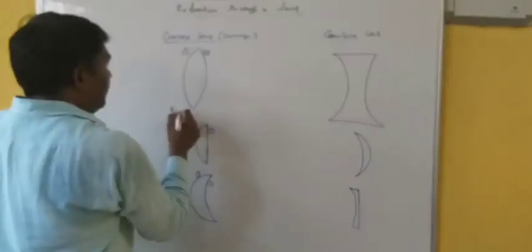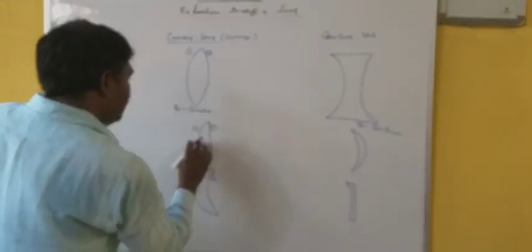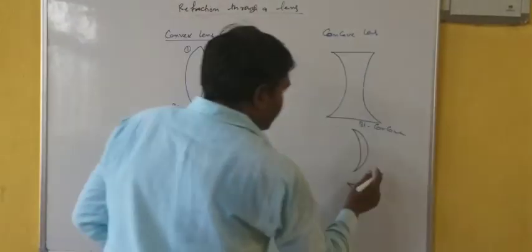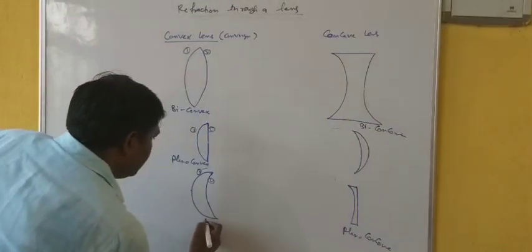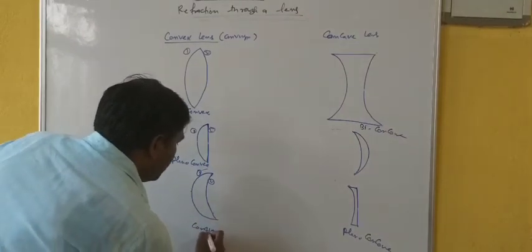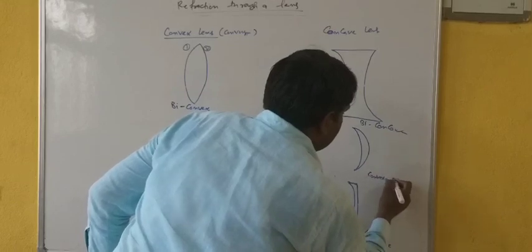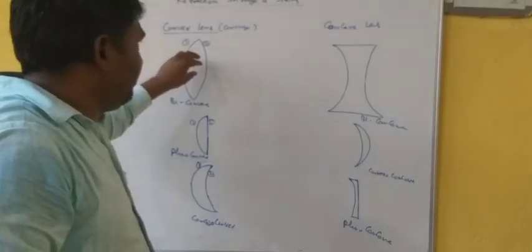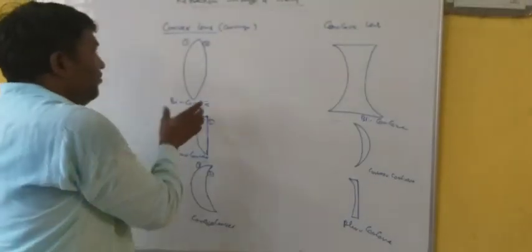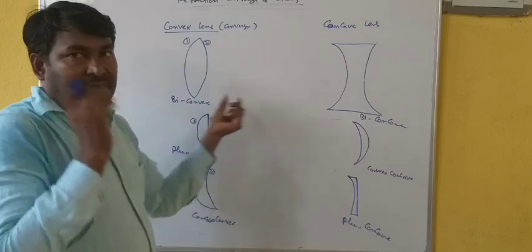This one is biconvex, this is biconcave, this is planoconvex, and this is planoconcave. Most of the time we do not use the names biconvex and biconcave — we simply call them convex lens and concave lens.